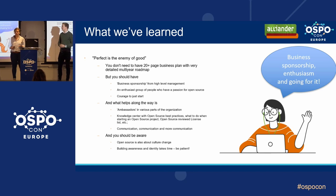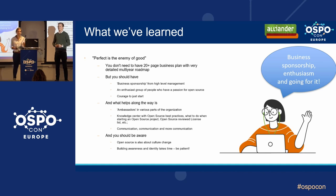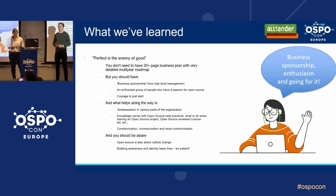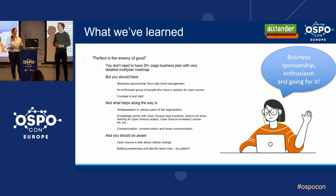To sum up what we've learned: perfect is the enemy of good. You don't have to have a 20-plus page business plan with very detailed roadmaps. We started and tried to see what the company needed in order to move forward, and that's where we focused. Things that really helped us along the way include business sponsorship from high-level management — and I don't mean only money, but having the words 'open source' mentioned at all layers of the company.